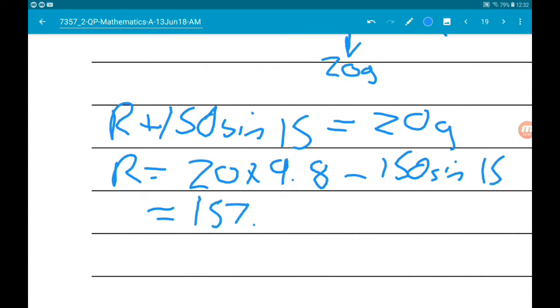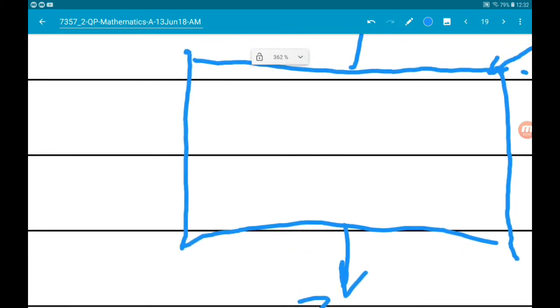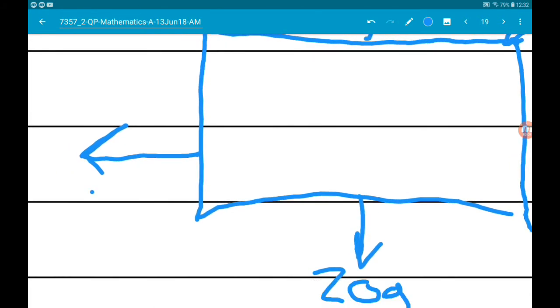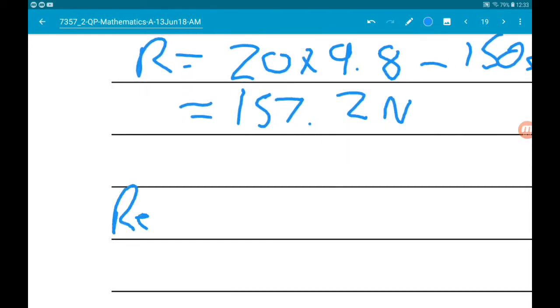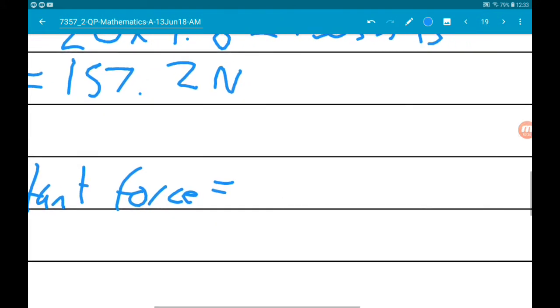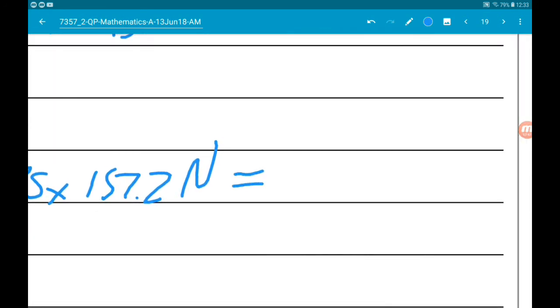So 157.2 newtons. Now, we can work out the friction or the resistance force. Again, the resistance is mu times R. So the resistance force is 0.85 times 157.2, and that gives us 133.6 newtons.